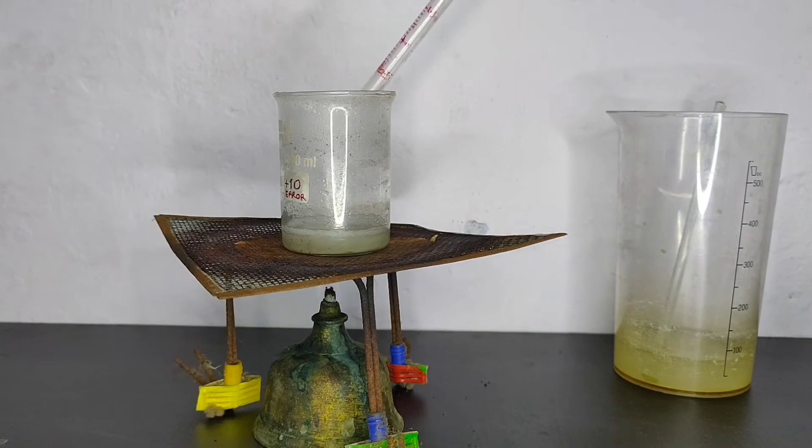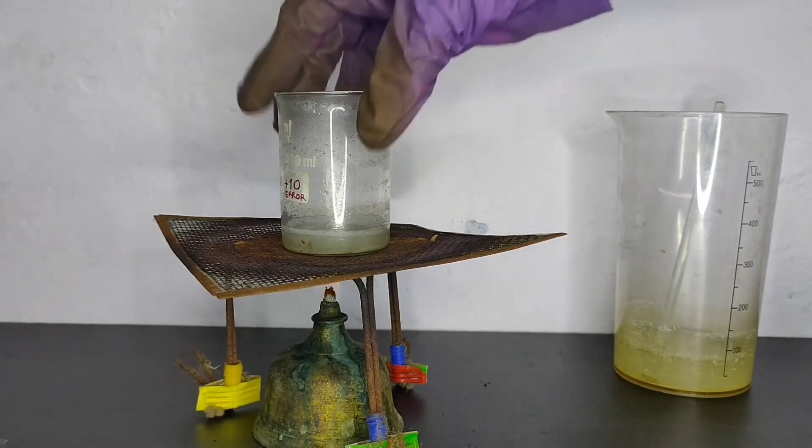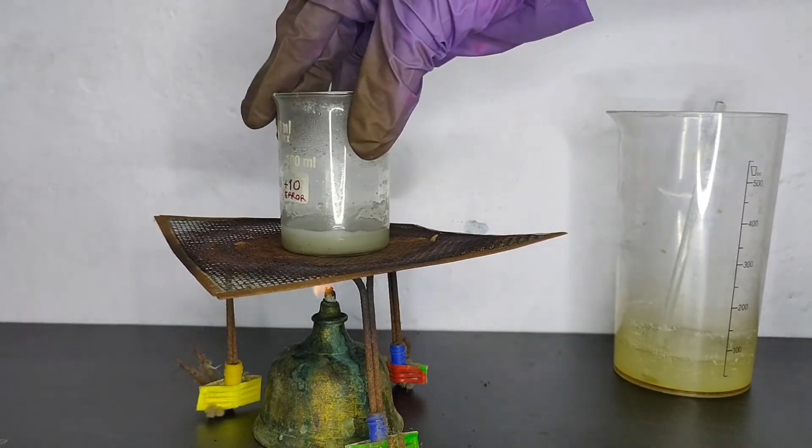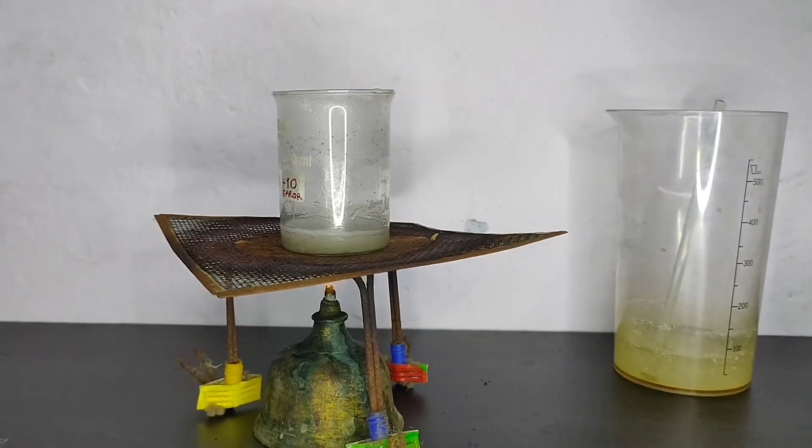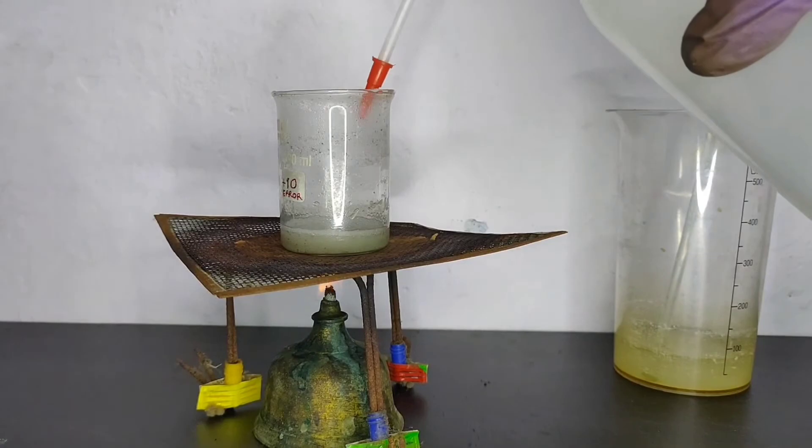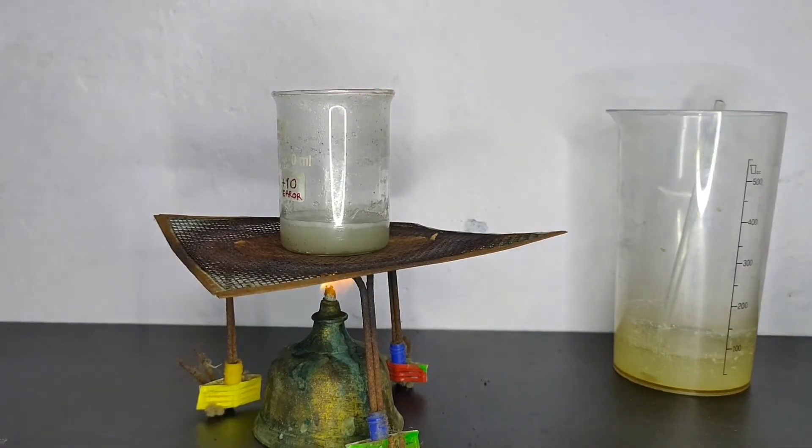I added 0.5 ml of glacial acetic acid. The solution remained turbid and milky. So I added some more distilled water.